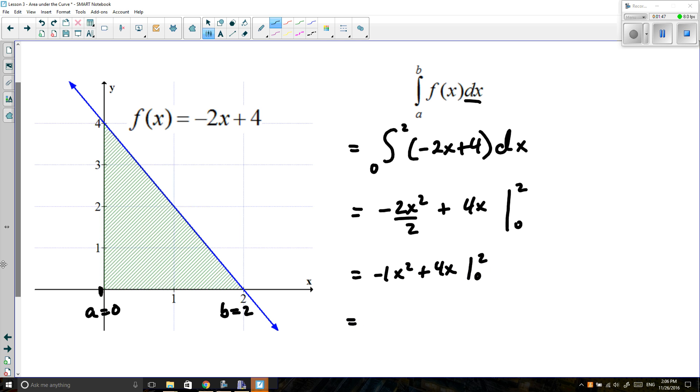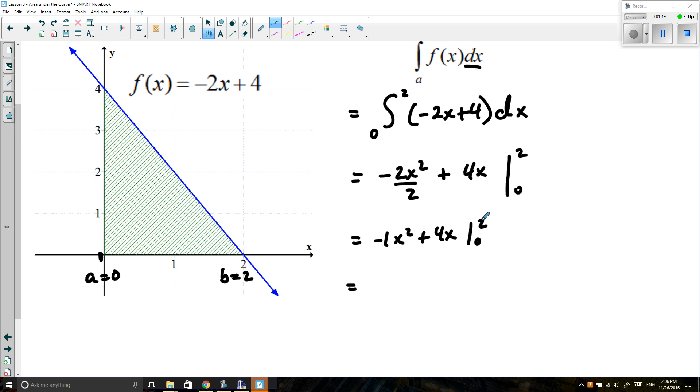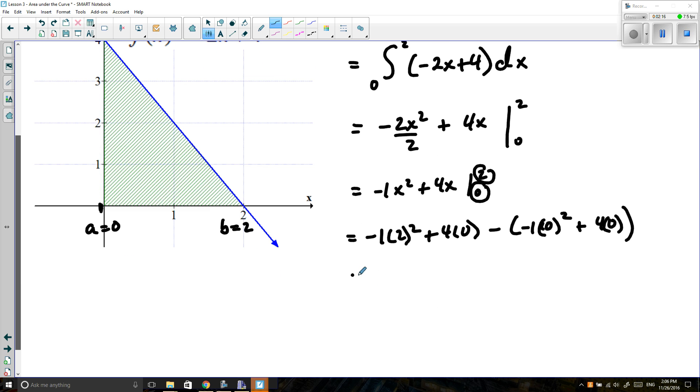So I'm going to evaluate my integral. The first value we put in always is the upper limit. So I have negative 1 times 2 squared plus 4 times 2. And then I'm going to subtract the evaluation when I put in my lower limit, which is actually going to end up being 0. So I get negative 1 times 0 squared plus 4 times 0. So this is what I have. I'm going to find our value here.